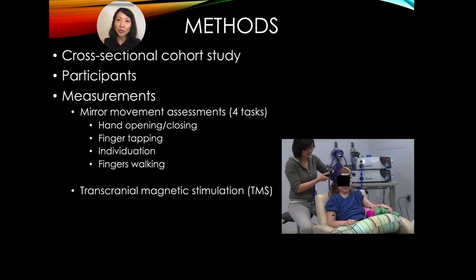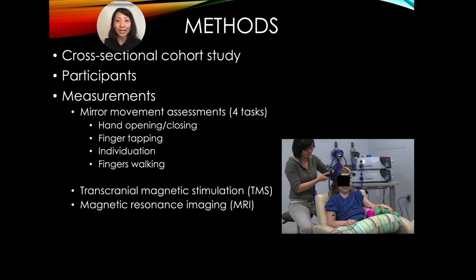We used transcranial magnetic stimulation, or TMS, to identify the corticospinal tract connectivity. Additionally, we used MRI to identify their underlying brain lesion type. Finally, their hand function assessments were evaluated using both unimanual and bimanual hand function tests.